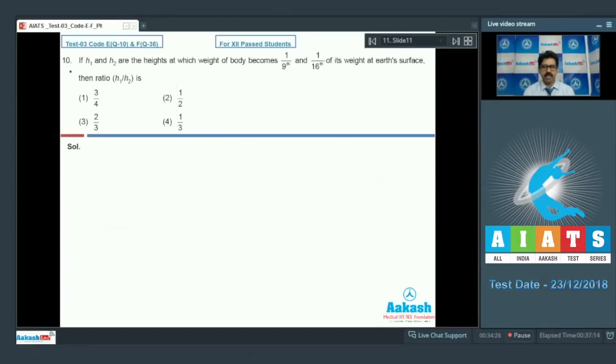Question 10: If h1, h2 are the heights at which weight of the body becomes 1/9th and 1/16th of the weight at the surface, then h1 upon h2 is? Variation of weight with height: weight w equals gmm upon r plus h whole squared, where h is the height. At height h1, w1 equals w by 9, equals gmm upon r plus h1 squared. Similarly at height h2, w2 equals w upon 16, equals gmm upon r plus h2 squared.